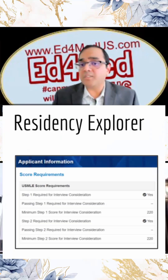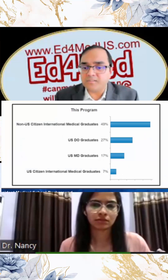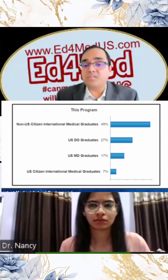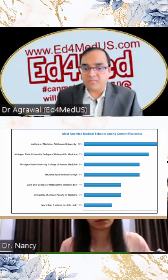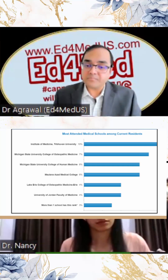Residency Explorer also gives information on how many non-US IMGs are in a program. For example, I pulled information from Beaumont Hospital, where I did my residency many years ago. It also tells you which medical schools the applicants in that program are from. There's more data available, but at least the top programs are listed.